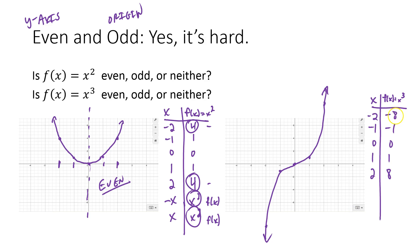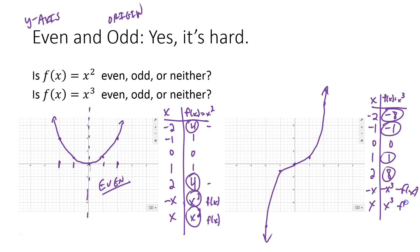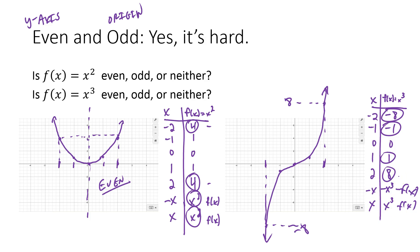Check it out — I plug in negative 2 and I get negative 8. Plug in positive 2 and I get positive 8. They're kind of the same, but there's a negative in front of one of them. Negative 1 and 1 give similar answers but one has a negative in front. So this time, if I plug in negative x and positive x, they're going to give me opposites. x gives me x³, and negative x gives me negative x³ — the opposite of the function, which is negative f(x).